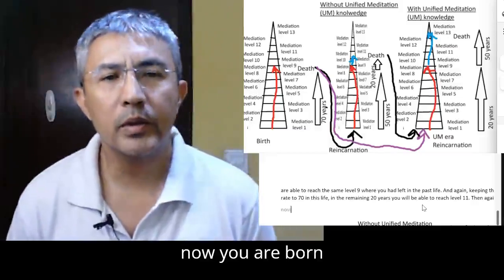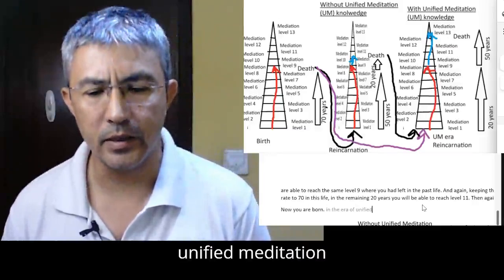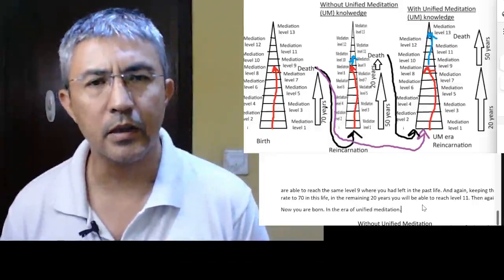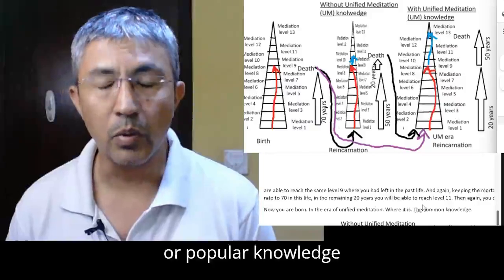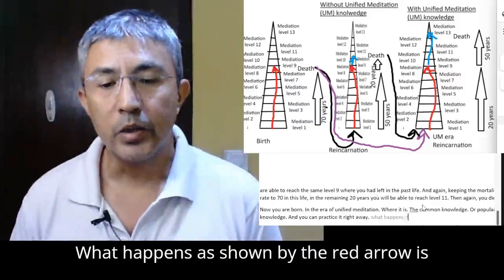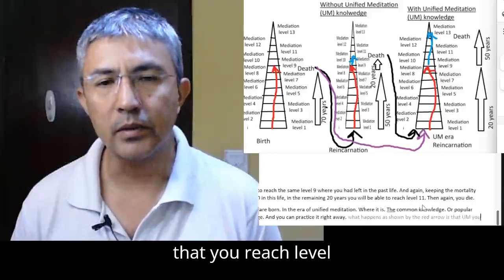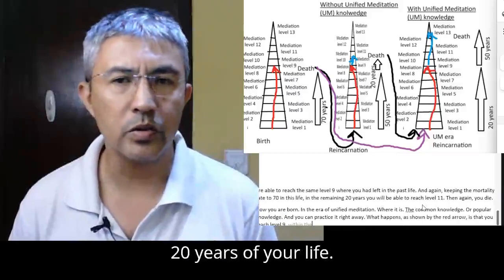Now, you are born in the era of unified meditation where it is common knowledge or popular knowledge and you can practice it right away. What happens as shown by the red arrow is that you reach level nine within the first 20 years of your life.